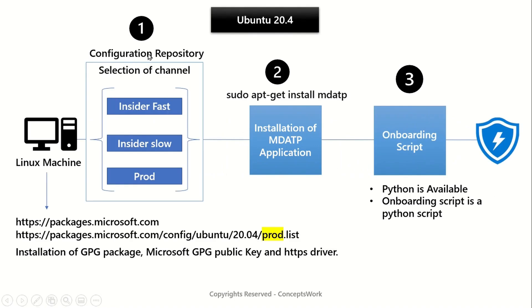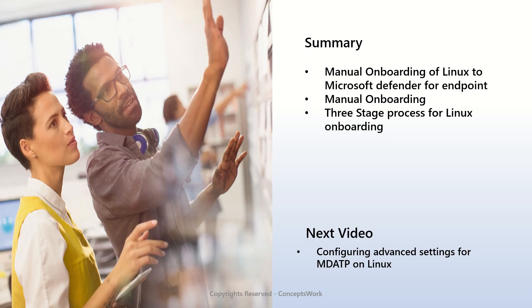Let's take a quick recap of what we discussed. This is the step-by-step process followed for Linux: defining the channel, installation of GPG, adding the public key, installing the HTTPS driver, installing the mdatp application, and lastly running the onboarding script. Once these steps are followed end-to-end, your machine will be onboarded to the MDE console without any issues.